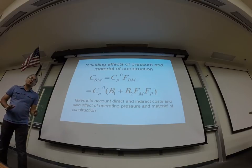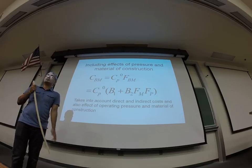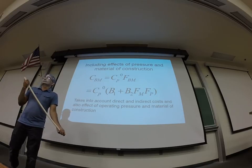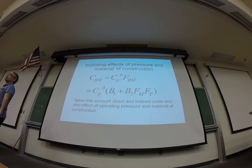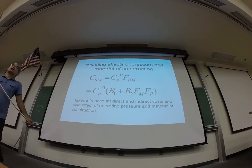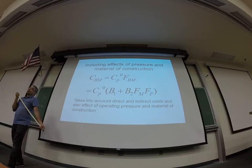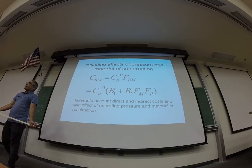So by now, everybody understands how to calculate the cost of the equipment at base conditions, CP0? How? How do you do that? Look in the appendix. What do you look for? K1, k2, k3.